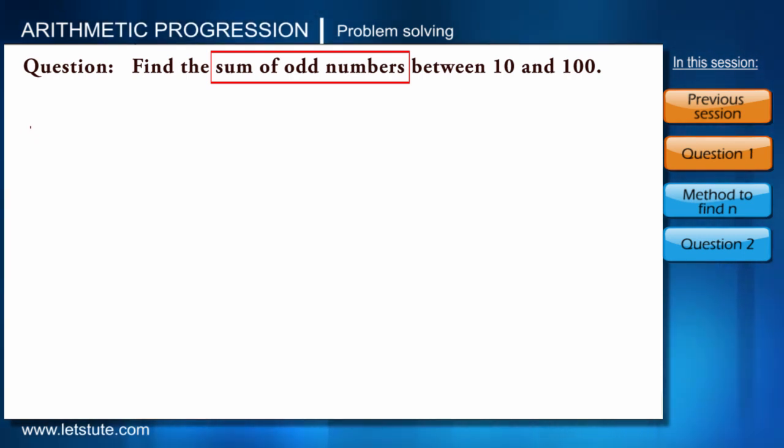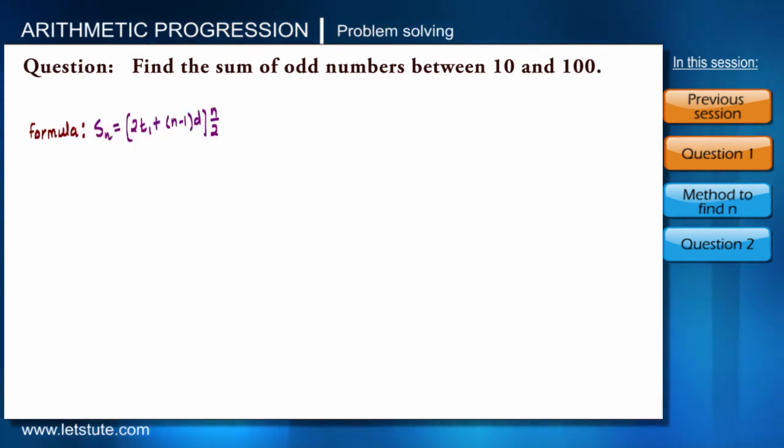We have to find sum of odd numbers, so which formula will we be using? Yes, you are right, we will use SN. For calculating SN, we need T1, n, and d. We will calculate these parameters one by one, and getting these parameters will be very easy if we list the given range of numbers.